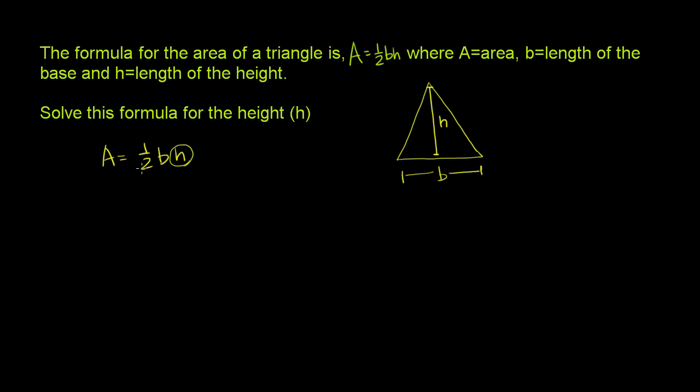But let's see if we can get rid of this one-half. So the best way to get rid of a one-half, and it's being multiplied by h, is if we multiply both sides of the equation by its reciprocal. If we multiply both sides of the equation by 2 over 1, or by 2. So let's do that.